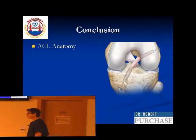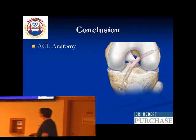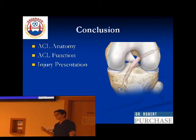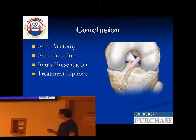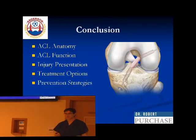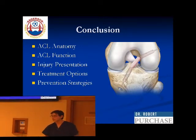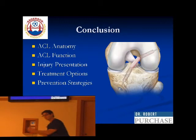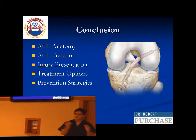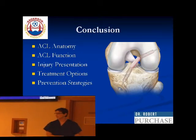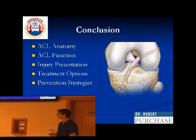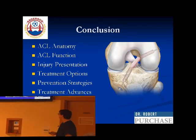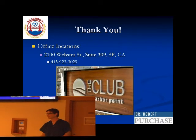So, we talked about ACL anatomy, its function, how people present when they've torn their ACL, the treatment options, how to prevent them — working on correct landing and doing plyometrics and strength training so we can land as well in the fourth quarter as in the first — and then how we do a better job of reconstructing these things. Hopefully we have some questions.